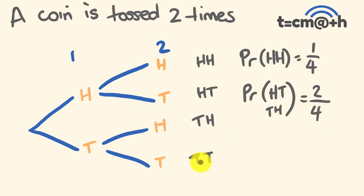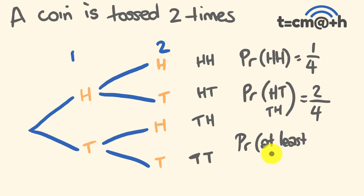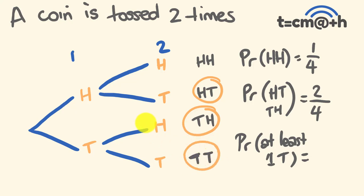You can also see that the probability of getting tails and tails is one out of four. What about the probability of getting at least one tail? Looking at the outcomes, head-head doesn't have a tail, but head-tail, tail-head, and tail-tail all have at least one tail — so the probability is three out of four.